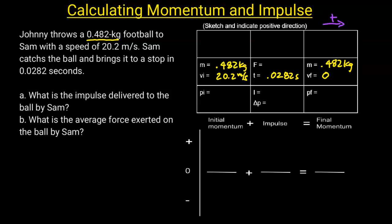I'm going to sketch a picture and indicate the direction of the velocity. I'll draw the initial velocity VI to the right. Then the ball is coming to a stop, so VF is going to be 0. There has to be a force to the left to stop the ball and slow it down. I'm going to draw a little force diagram right there.